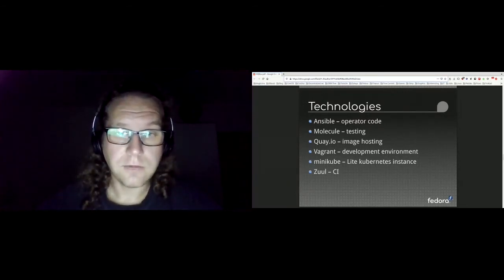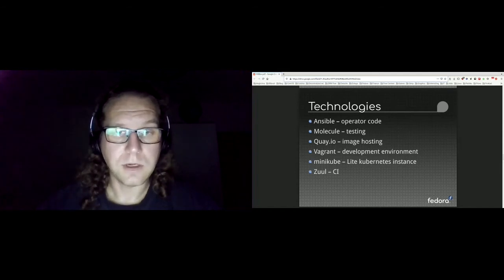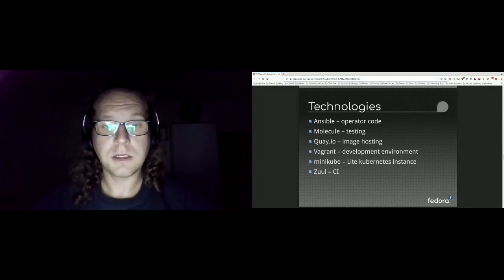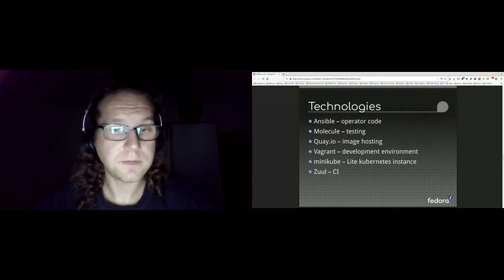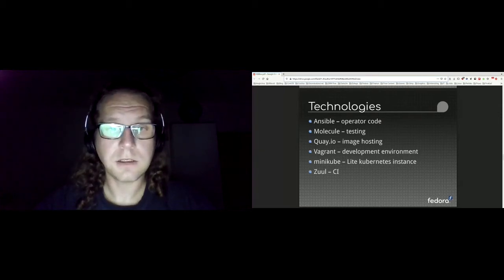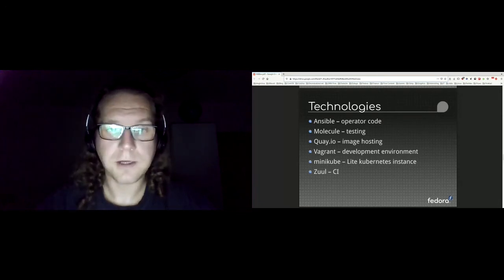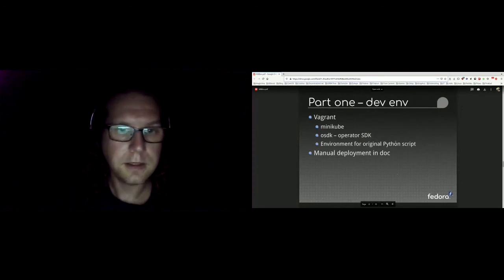We used Quay.io for image hosting. The most problematic part was Koji, because there isn't any actual container image for Koji. So we created one in this project — you can find Koji Hub and Koji Builder on Quay.io, they are publicly accessible. We also used Vagrant for the development environment, which is used in a few other projects and creates everything for you.